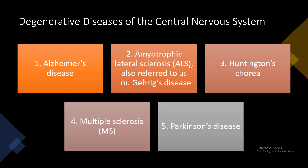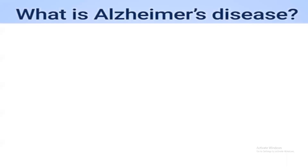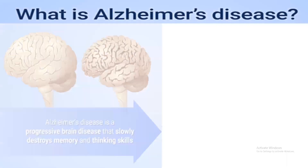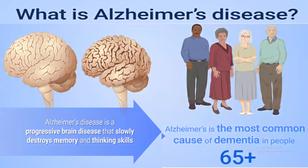We will now discuss three of these diseases: Alzheimer's, MS, and Parkinson's. Alzheimer's disease is a progressive brain disease that slowly destroys memory and thinking skills. It is the most common cause of dementia in people, especially those aged 65 and older.